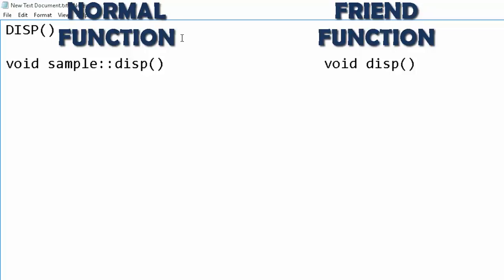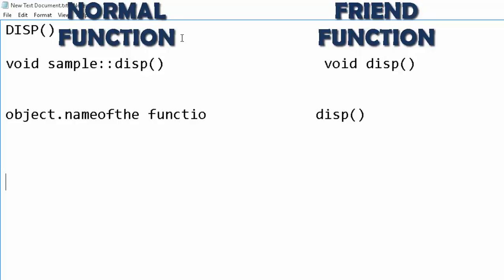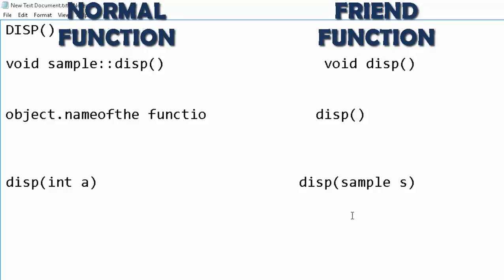The second difference is that for calling a simple function you have to use the object dot name of the function. But to call a friend function you do not need that — you can directly just write the function name and pass the argument. In a simple function you pass arguments as variables, for example an integer 'a'. But in a friend function, you have to pass an object as argument, for example using the class name 'sample' and then the object 's'.